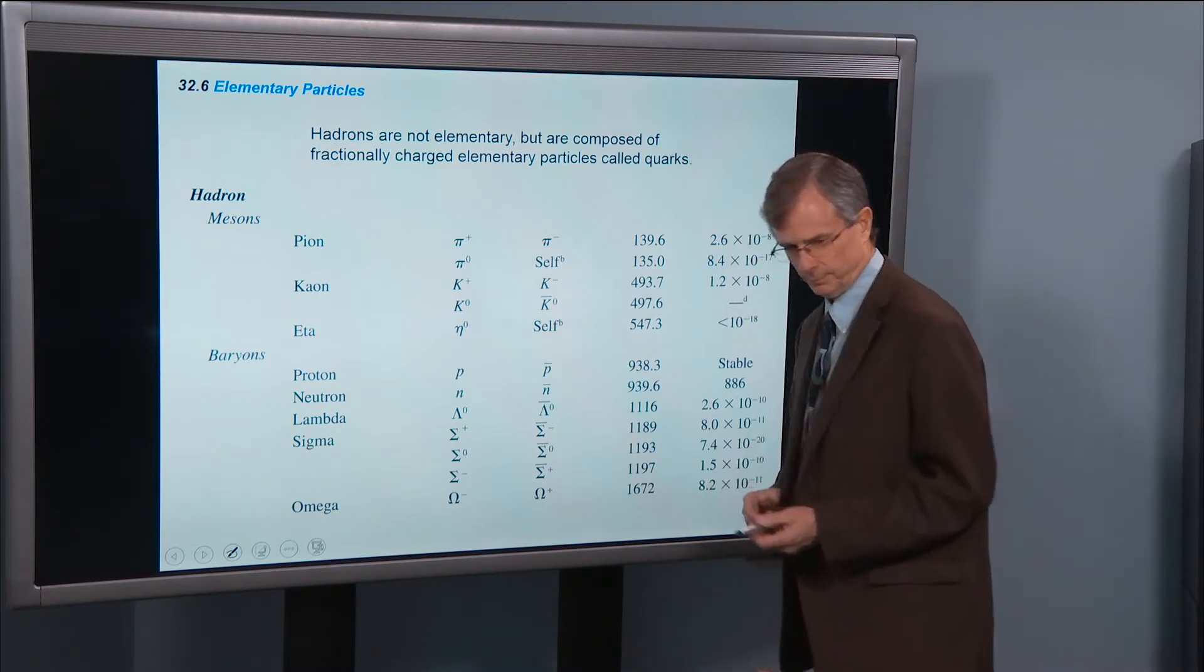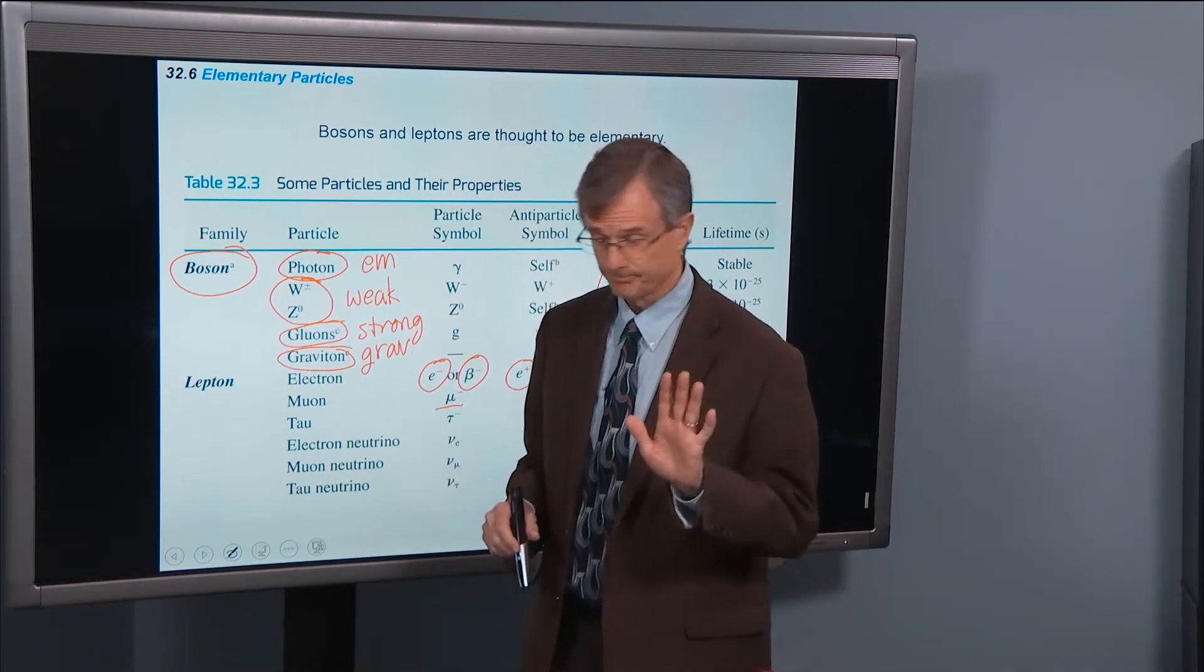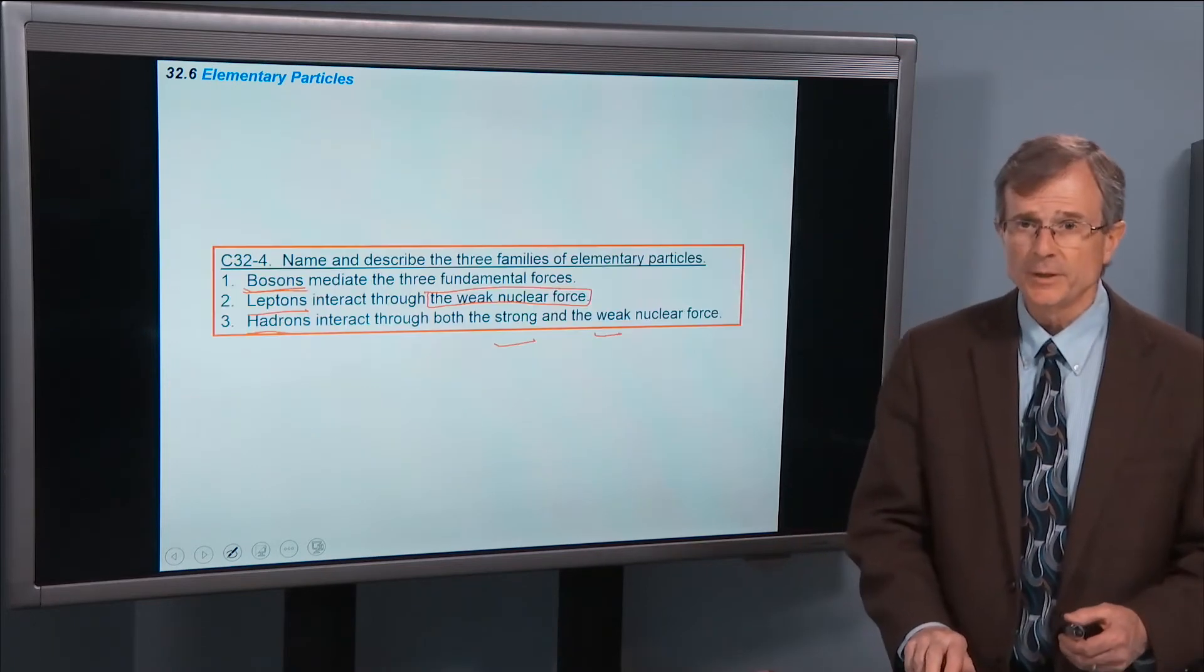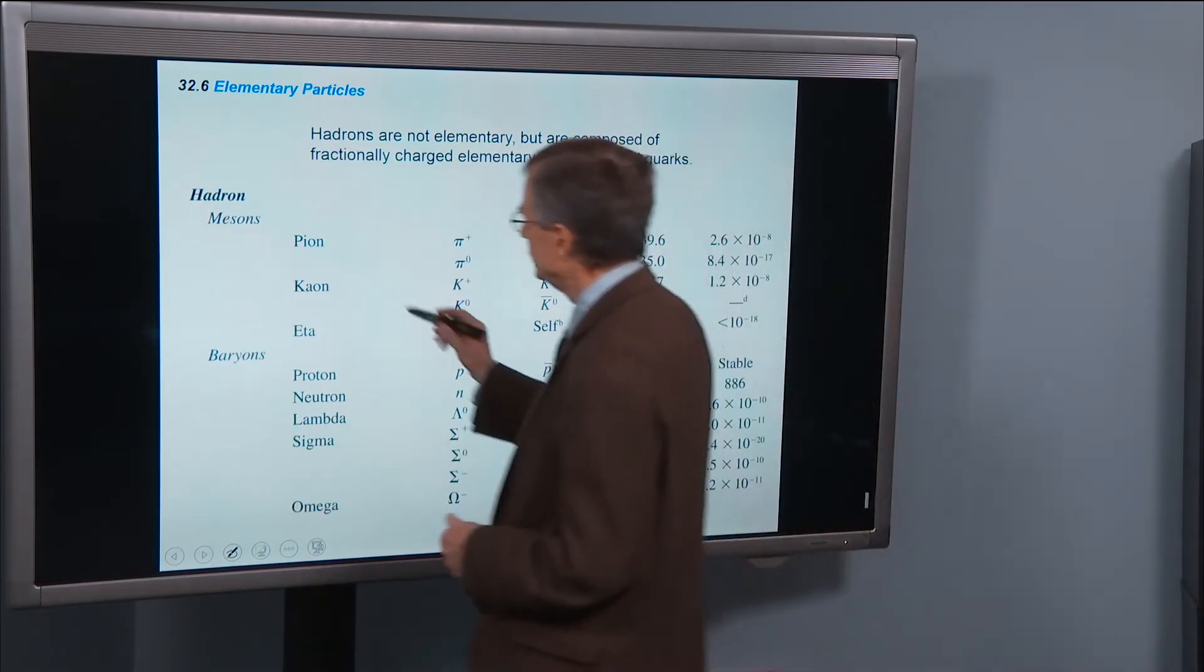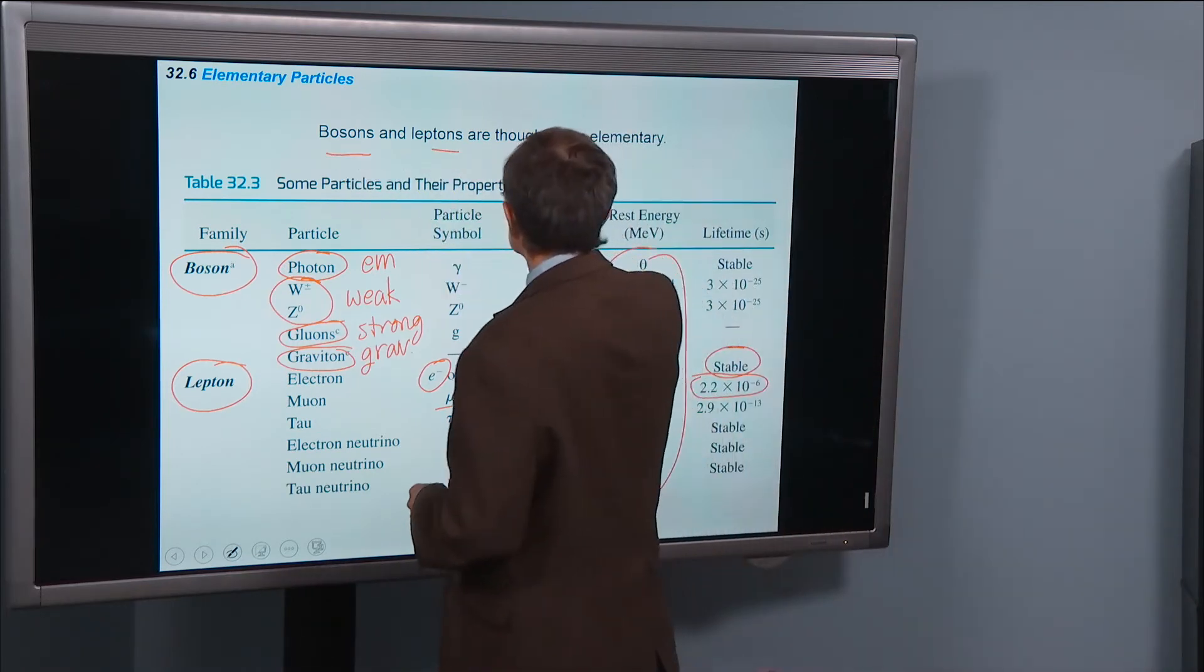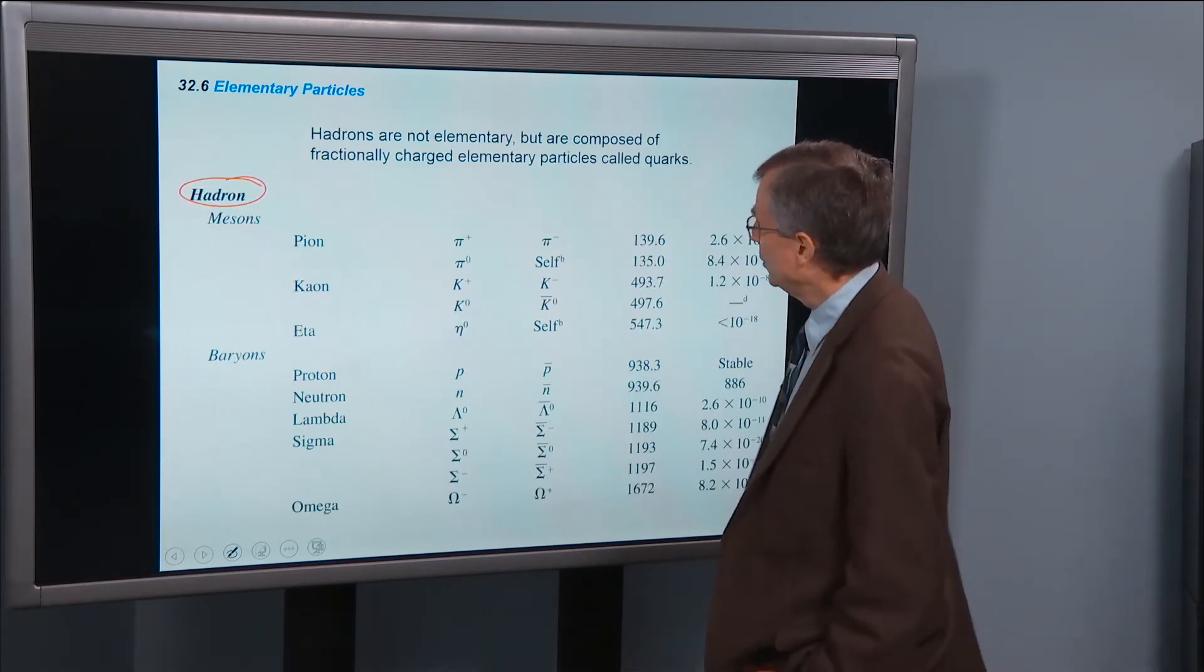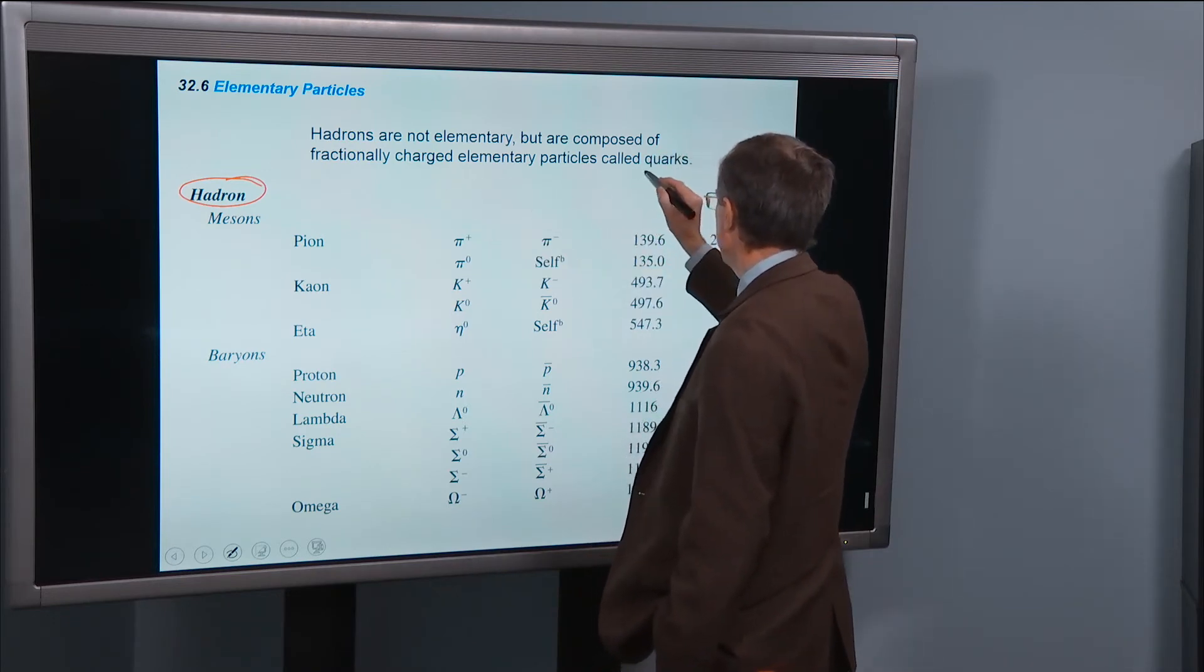Then hadrons. The bosons and leptons are thought to be elementary, nothing smaller than them. As opposed to hadrons, which are not thought to be elementary, that are composed of fractionally charged elementary particles called quarks.